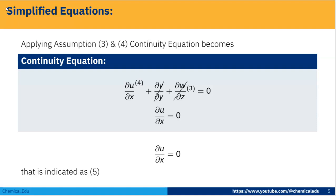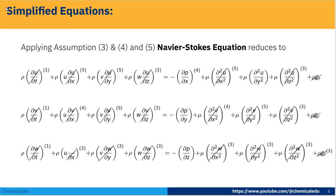Applying these assumptions: v = 0, w = 0. From the continuity equation, since this is essentially a 1D flow with v = 0 and w = 0, we get ∂u/∂x = 0. So velocity only varies in the y-direction.